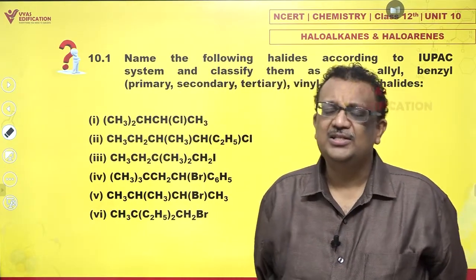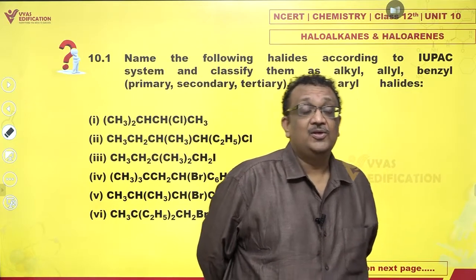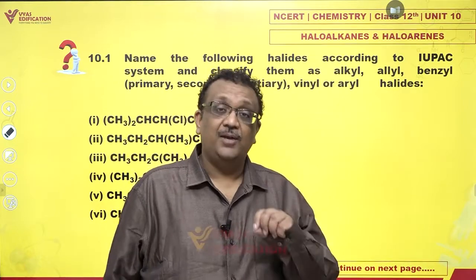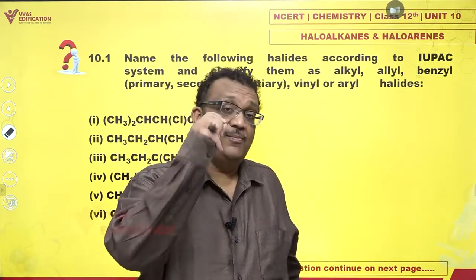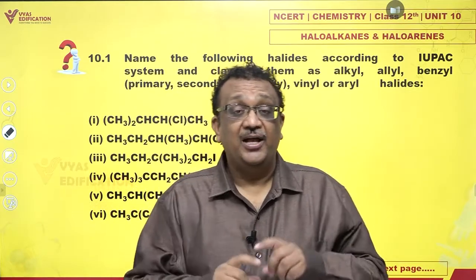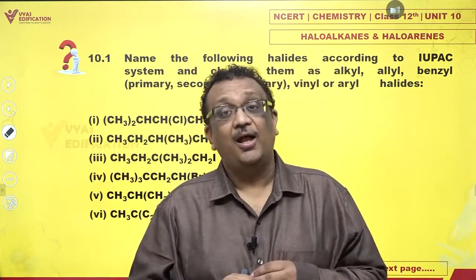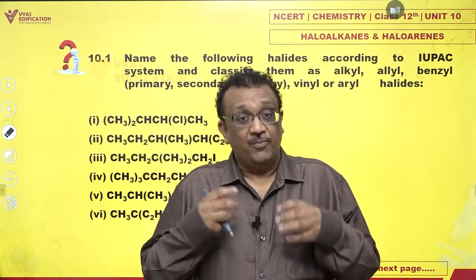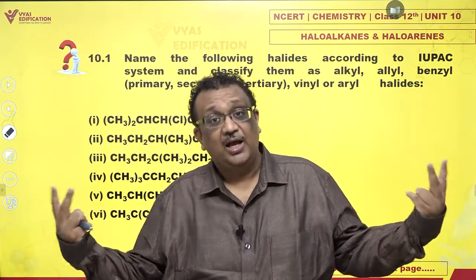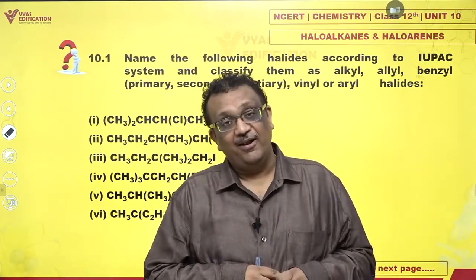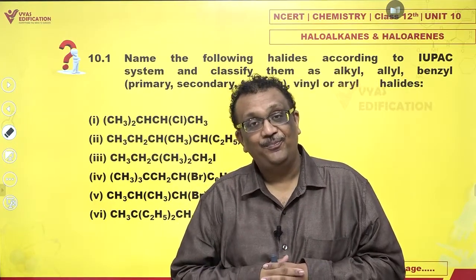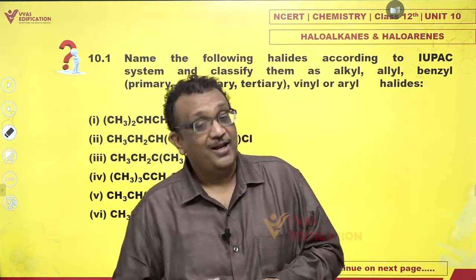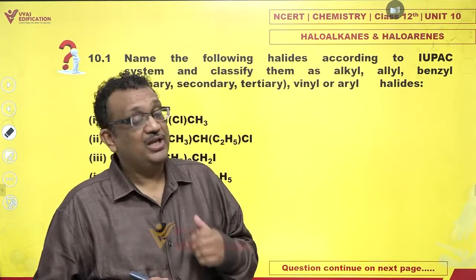How do you classify them? I'll just quickly revise the theory for you. Primary, secondary or tertiary means that the halides are attached to a primary, secondary or tertiary carbon. A primary carbon is a carbon atom which is attached to only one other carbon atom. If it is attached to two other carbon atoms, it is called secondary; three other carbon atoms, tertiary. Hydrogens attached to such carbon atoms are called primary, secondary or tertiary hydrogens, and halides attached to such carbons are also called primary, secondary or tertiary halides.